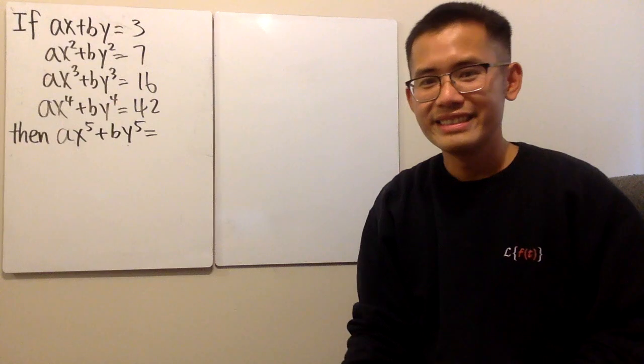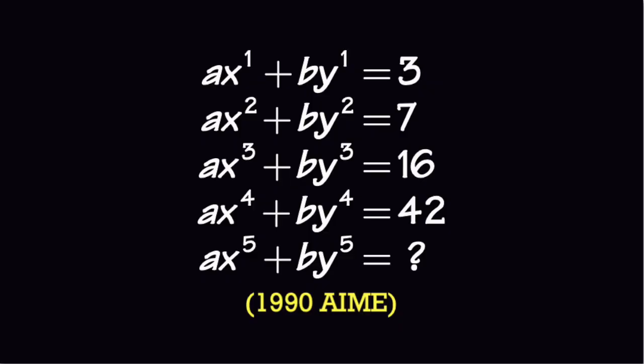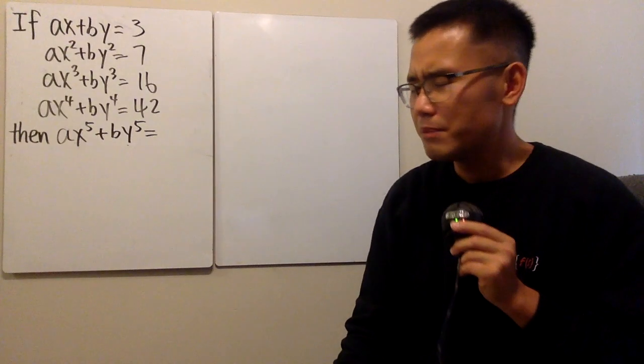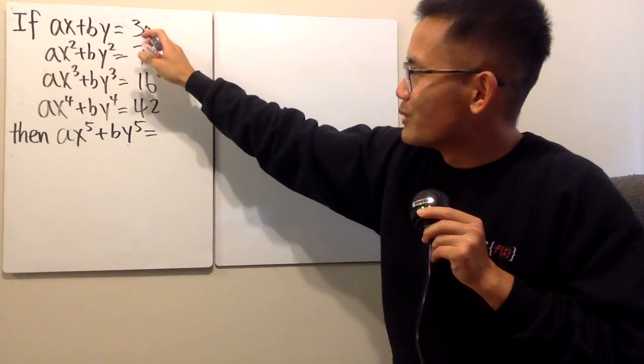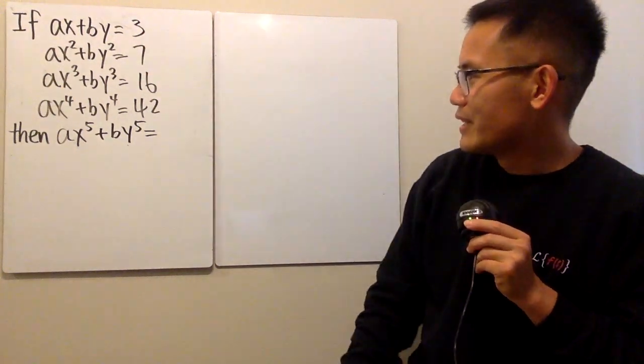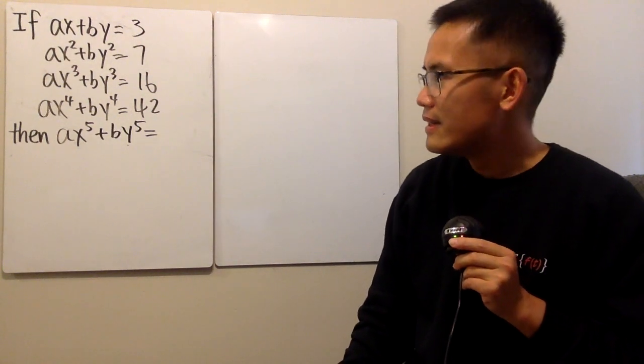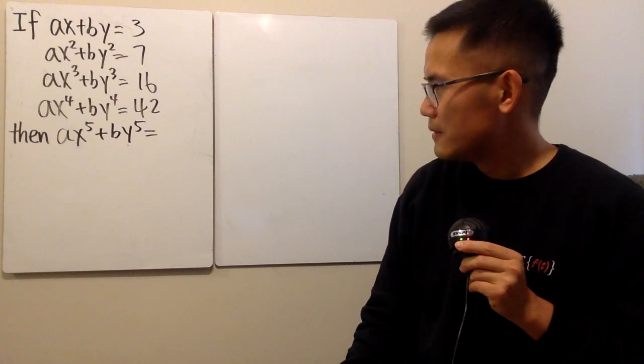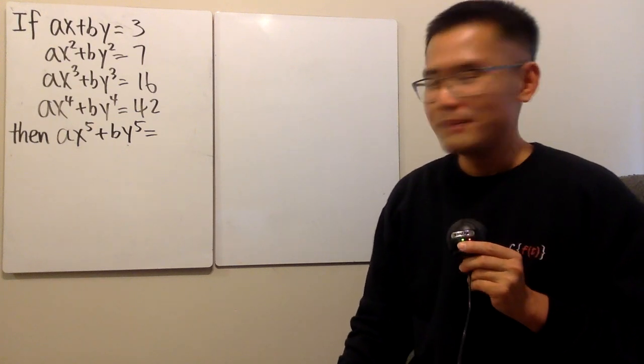Stay home and do math for fun! Here is the question: if ax + by = 3, ax² + by² = 7, ax³ + by³ = 16, and ax⁴ + by⁴ = 42, then what is the value of ax⁵ + by⁵? Is it possible for us to just look at these numbers and figure out the answer?